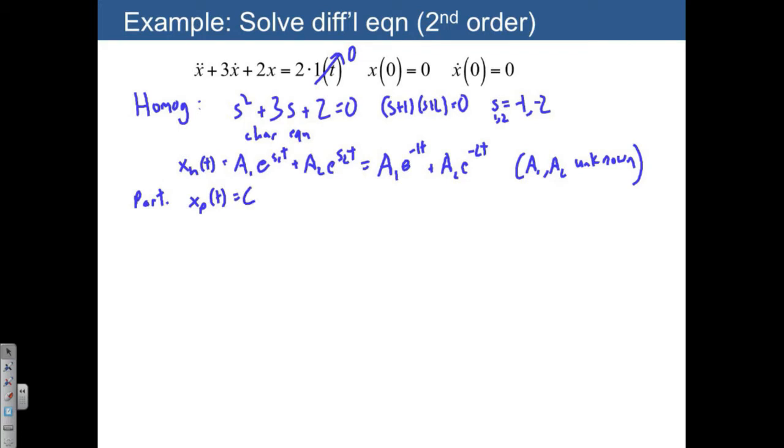What happens when we plug that in? We get xp double dot plus 3xp dot plus 2xp is equal to 2 for time greater than or equal to 0. And luckily for a constant, a lot of these things drop out. So what we end up with is just xp is equal to 1.